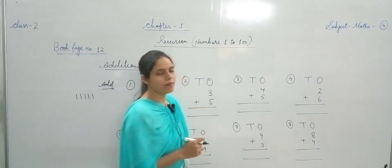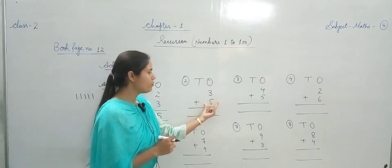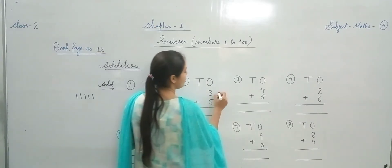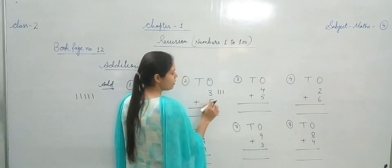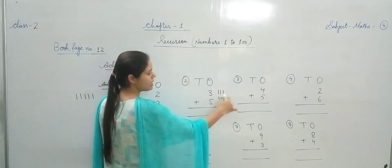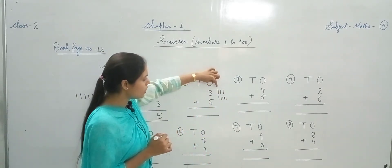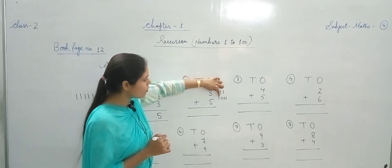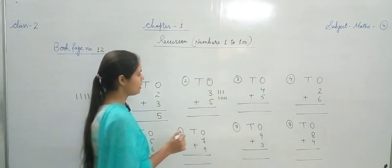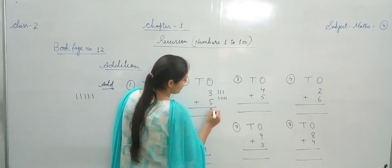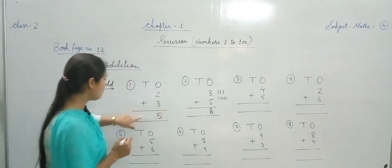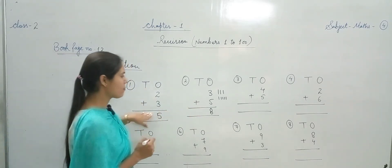Now 3 में 5 plus करना है — यानि 3 ones और 5 ones। तो 3 ones plus 5 ones: पहले 3 lines draw करेंगे, फिर 5 lines draw करेंगे। Total lines count करना होगा — 1, 2, 3, 4, 5, 6, 7, 8. We have total 8 lines. Ones column में 8 mention कर देंगे — Tens column में कुछ नहीं लिखना क्योंकि कोई number add नहीं किया वहाँ।